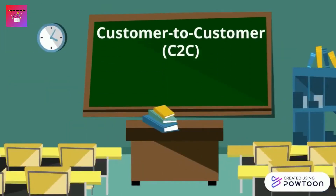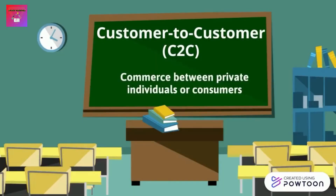Now, let's study about customer to customer transaction, which is also known as C2C. C2C is a commerce between private individuals or consumers. It is a business model whereby customers can trade with each other, typically in an online environment. C2C marketing has soared in popularity with the arrival of the internet. Private individuals or consumers, sometimes businesses, can buy from and sell to one another in an auction process at an auction website or classified ads at portal websites. For example, eBay, Alibaba.com and Lelong.com.